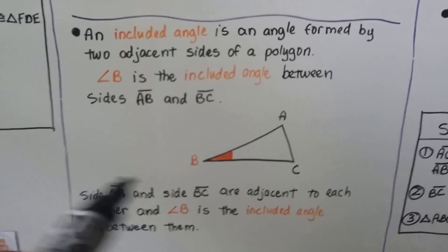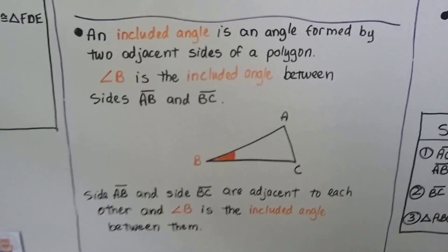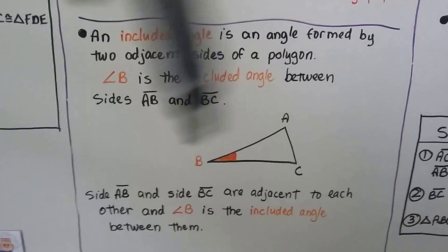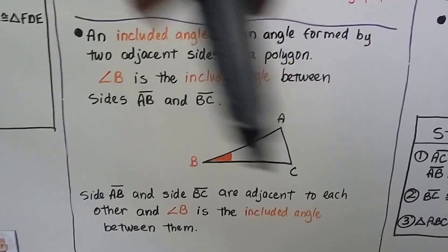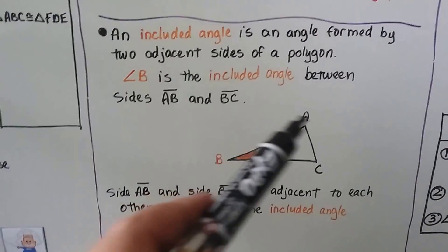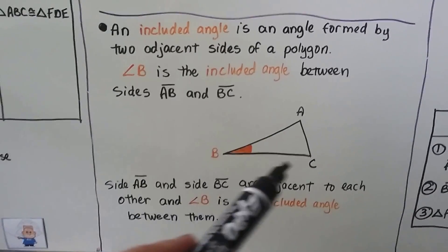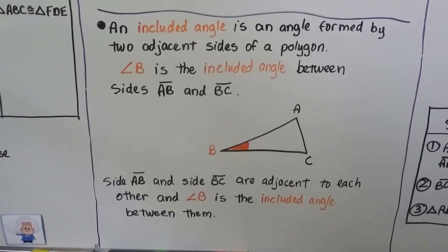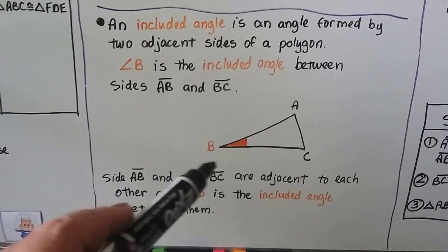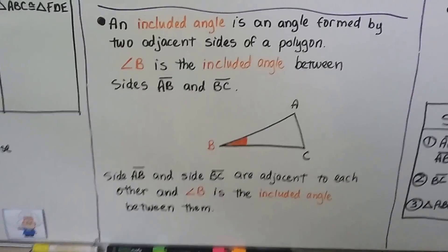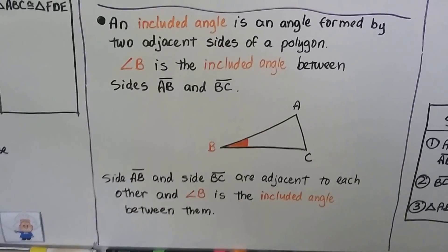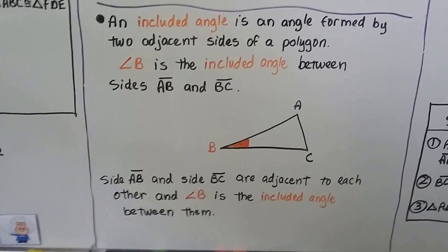Angle B right here is the included angle between sides AB and BC. AB and BC are adjacent to each other, and angle B is the included angle between them. So that's what an included angle is.